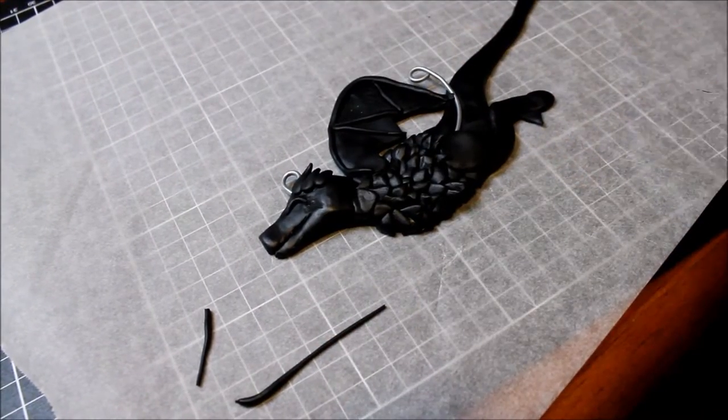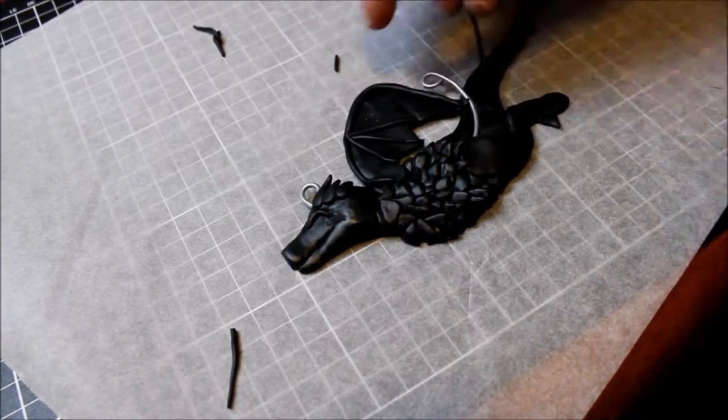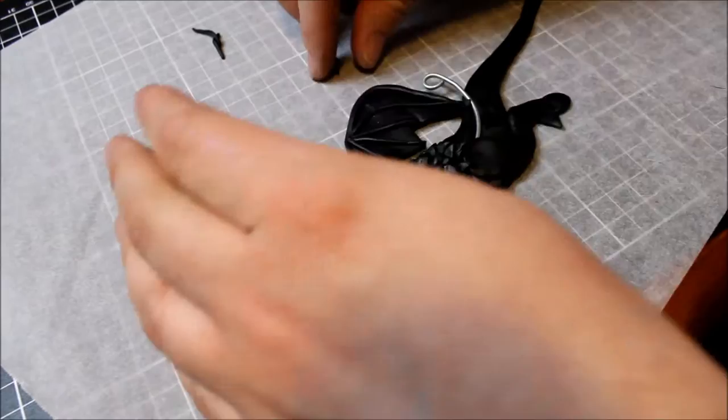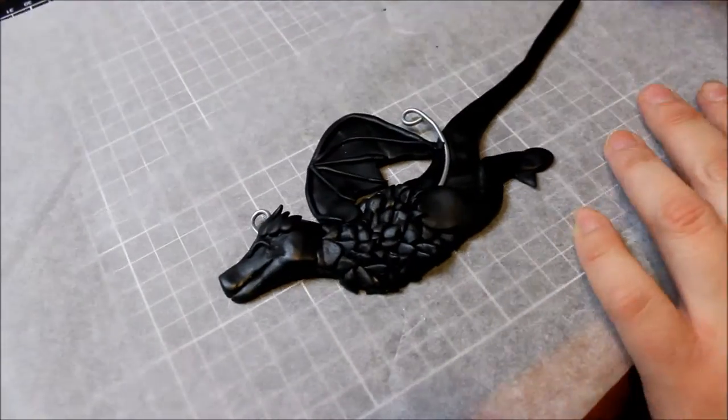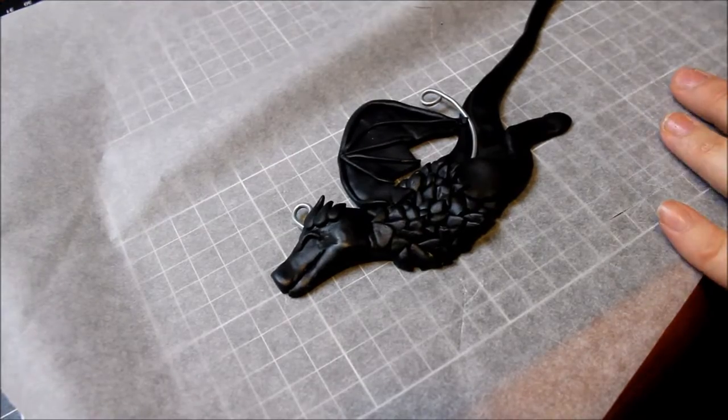I don't know the technical term for this bit, but just that veining of the wing, making sure that all the points meet at one point and then go to various points down towards the edge of the wing.